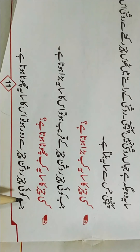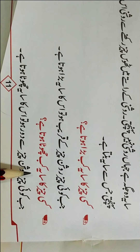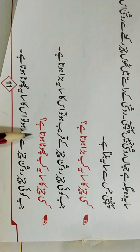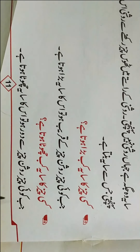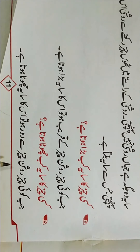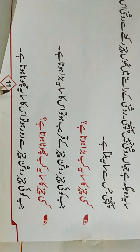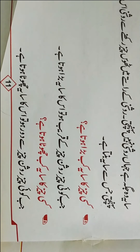Sawal number 6 hai: kisi chiz ka saya kub chota hota hai? Iska javaab hai, jab koi chiz roshan chiz se dour ho to, iska saya chota hota hai. (Question number 6: When does a thing's shadow become smaller? The answer is, when a thing is far from the light source, its shadow becomes smaller.)